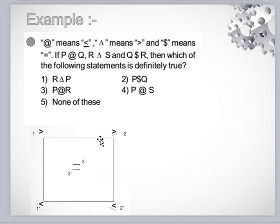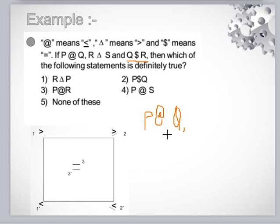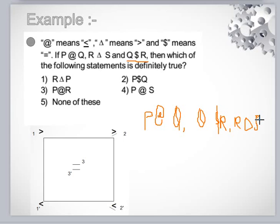Now I will give you an example and solve it with both the box rule and the simple method. Here, at-the-rate means less than equal to, triangle means greater than, and dollar means is equal to. The question is: P at-the-rate Q, Q dollar R, R triangle S. So following the chain rule, we can write P at-the-rate Q, Q dollar R, and R triangle S. We have to check which of the following statements is definitely true.